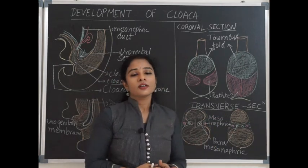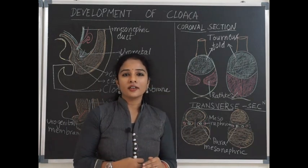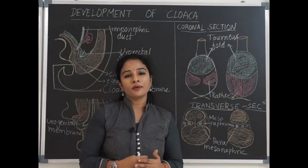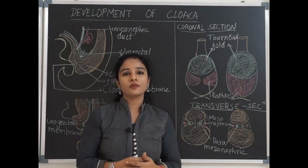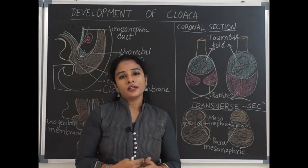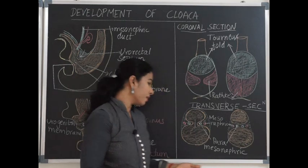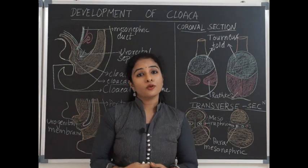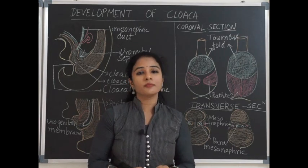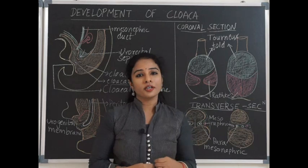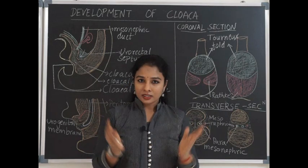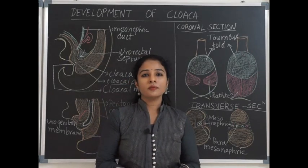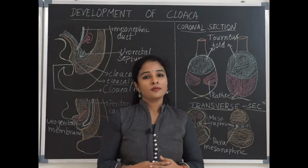The anal canal internally has a line called the pectinate line. Above the pectinate line, the anal canal is derived from the primitive rectum, that is the primitive cloaca. Below the pectinate line, the anal canal is derived from the proctodeum, that is the ectodermal proctodeum. So above the pectinate line the mucous membrane is endodermal in origin, and below it the mucous membrane is ectodermal in origin, derived from the surface ectoderm. The musculature of these tubes and the peritoneum are from the surrounding splanchnopleuric mesoderm.